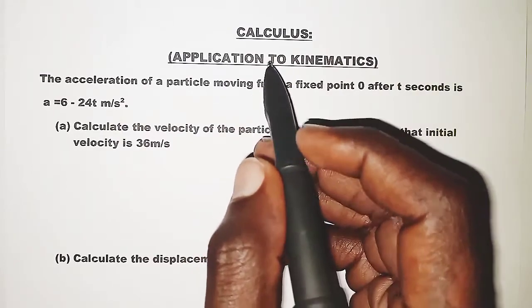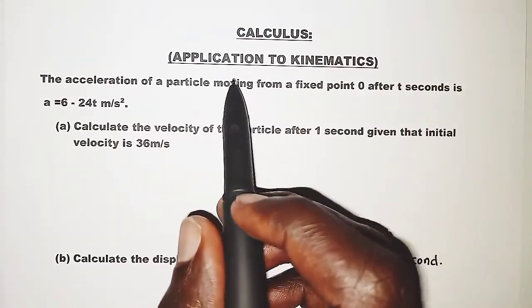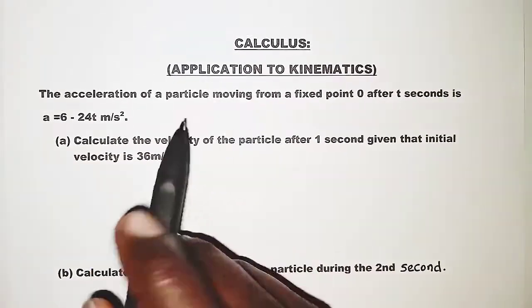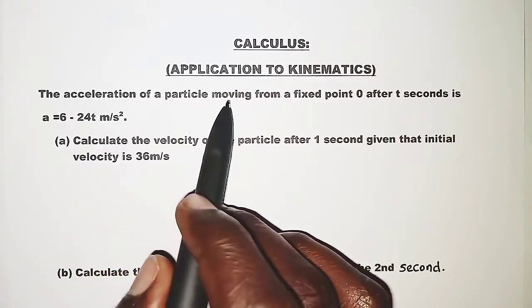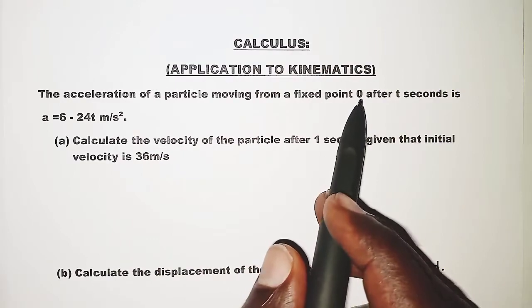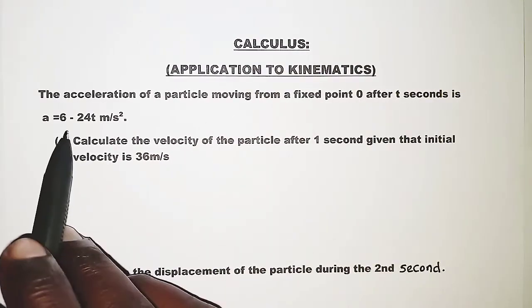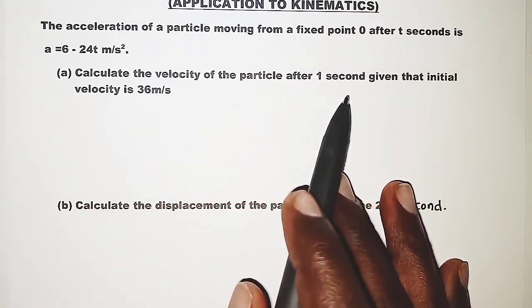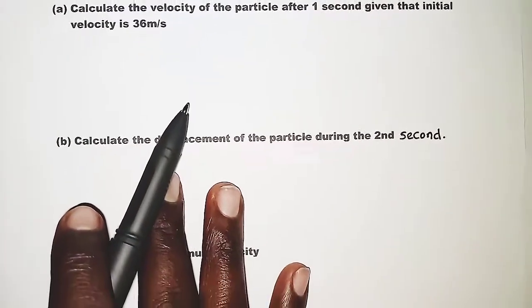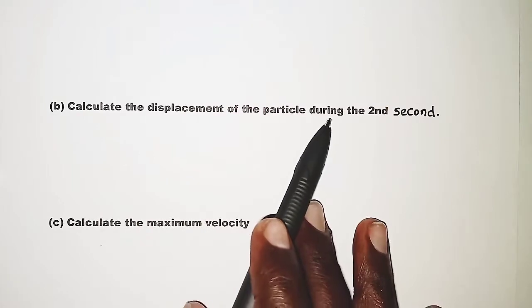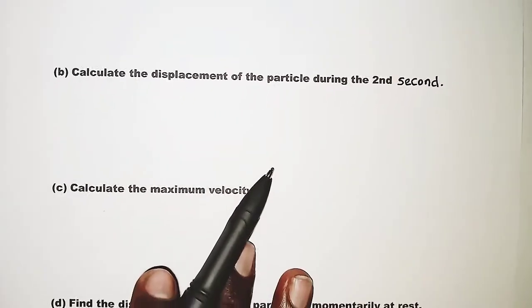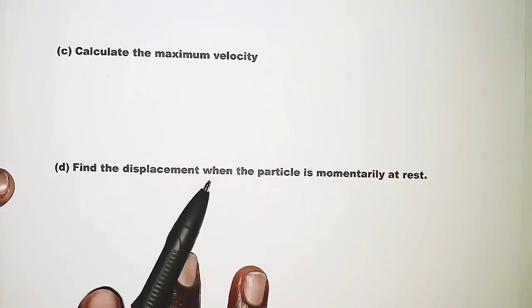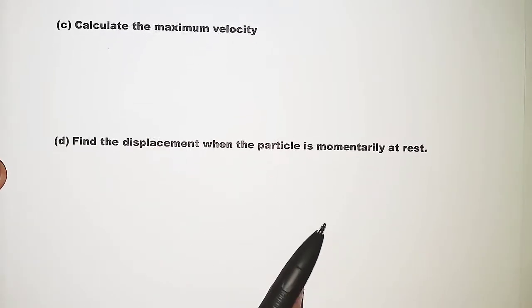Welcome. The topic today is calculus and we are going to look at the application of calculus to kinematics. The question states: the acceleration of a particle moving from a fixed point after t seconds is given. Part (a): calculate the velocity after one second given that the initial velocity is 36 meters per second. Part (b): calculate the displacement during the second second. Part (c): calculate the maximum velocity. Part (d): find the displacement when the particle is momentarily at rest.